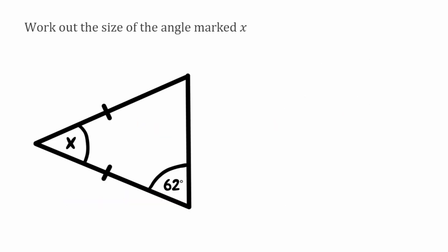For this next question, we're again finding the missing angle marked x. We've got an isosceles triangle — we can see that this side here is equal to this side here. That must mean that the other side is our base side. This is what I was talking about at the beginning: isosceles triangles can sometimes be orientated in a different way, so we've got to be extra careful. Going back to our rules, we know that the angles touching the base side are going to be the same. We can see we've got 62 degrees at the bottom, so this one at the top which is also touching that side must also be 62 degrees.